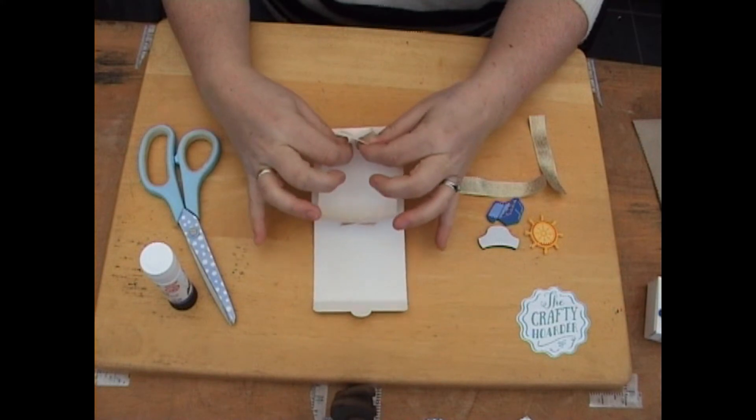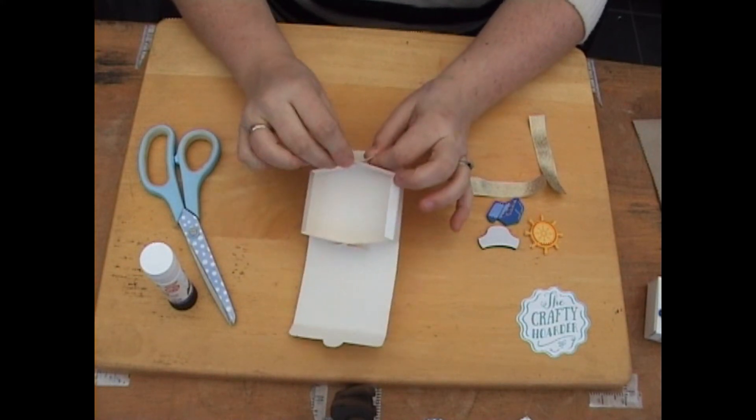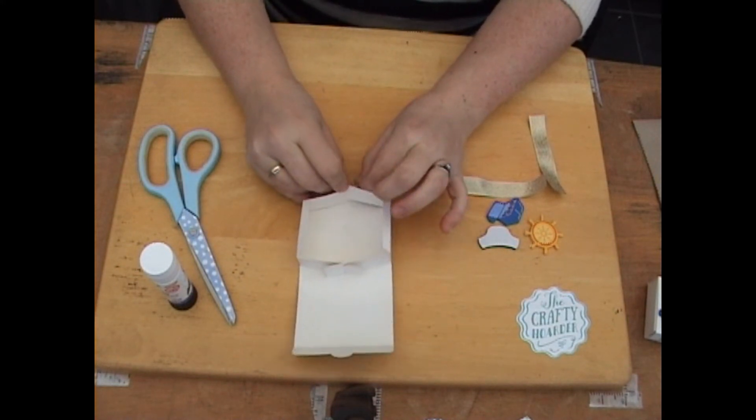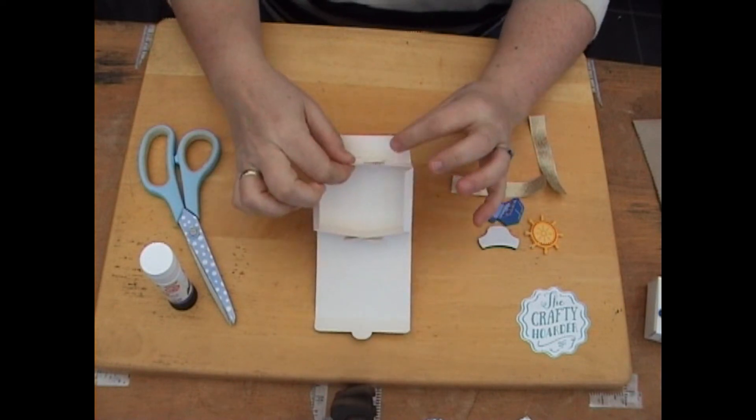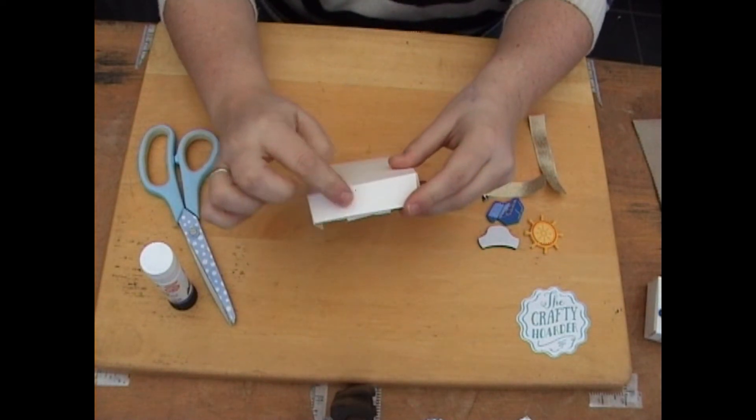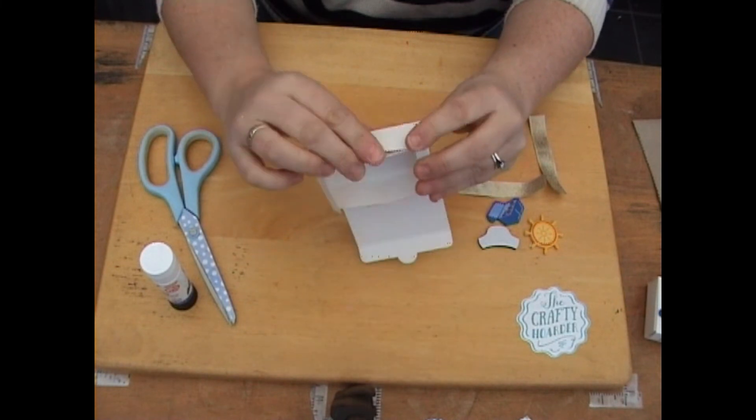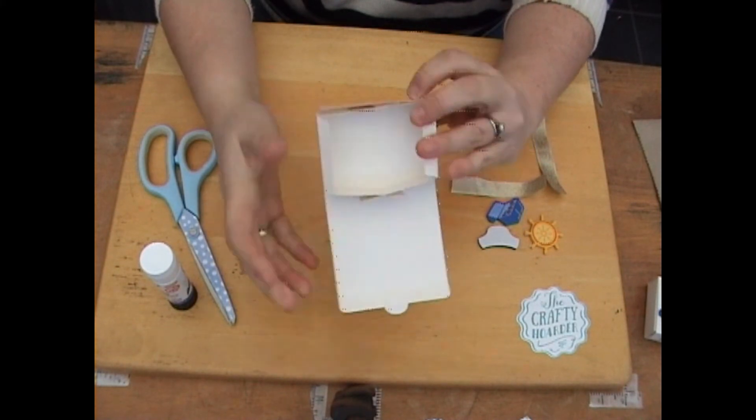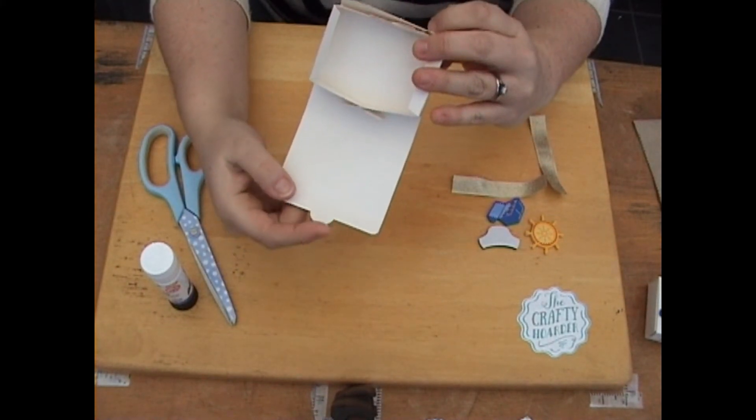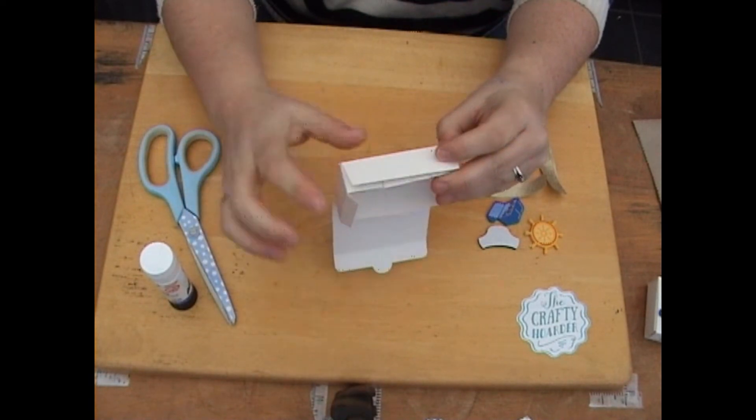Then the front one, you need to put these two in the middle together first and push them down. This front one has a little slit in to close it up. So I'm just going to bend that a little bit so this little tab at the top goes into the slit here.